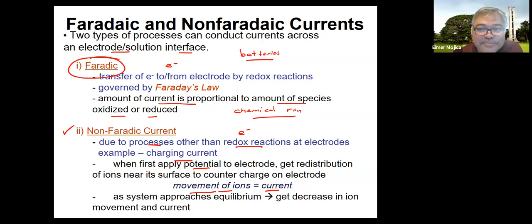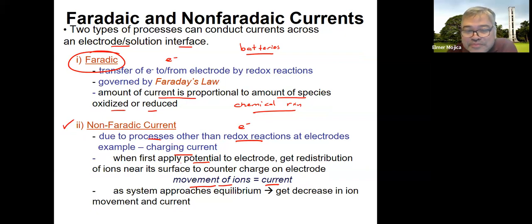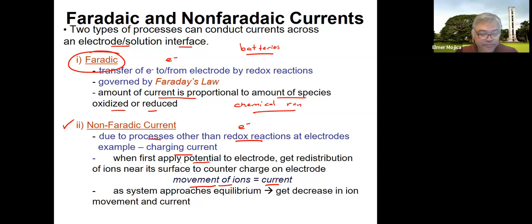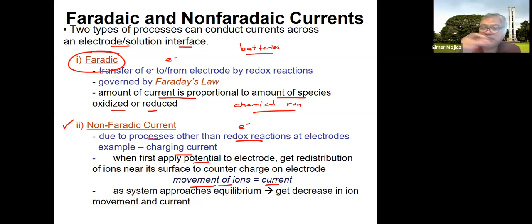Everyone got that? To simplify: one involves electrons and the other doesn't. Imagine an electron traveling down the external circuit going to the electrode surface. Either your electron can remain at the electrode surface and increase the charge — meaning no chemical reaction — or it can leave the electrode surface and transfer to the species in the solution, which becomes part of the Faradaic current.